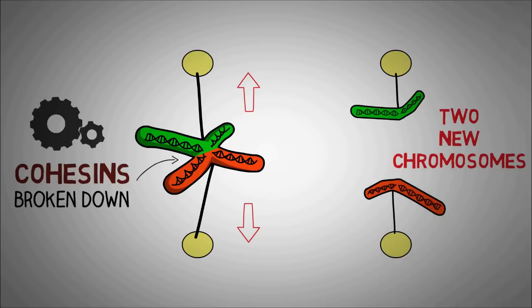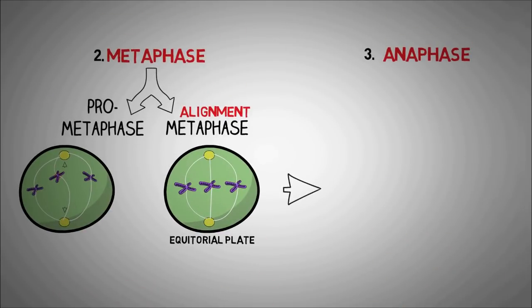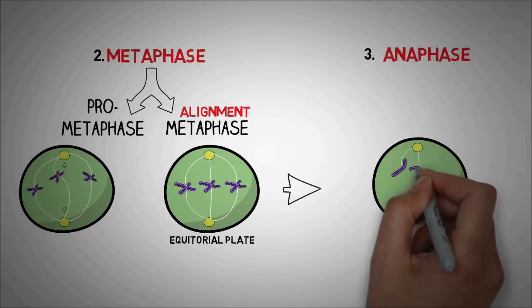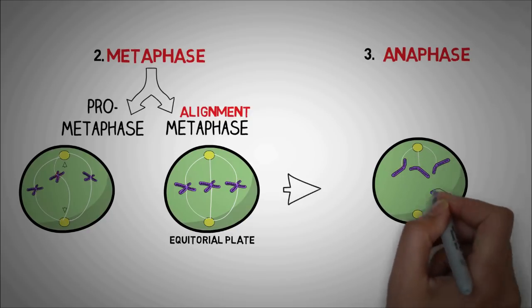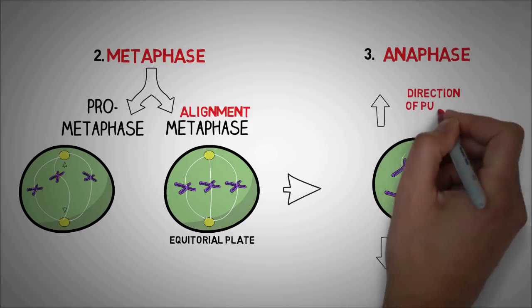The microtubules continue to pull the chromosomes and due to this, one set of chromosomes reaches to one pole of the cell and the other set reaches the opposite pole. Both these sets of chromosomes are exactly the same.